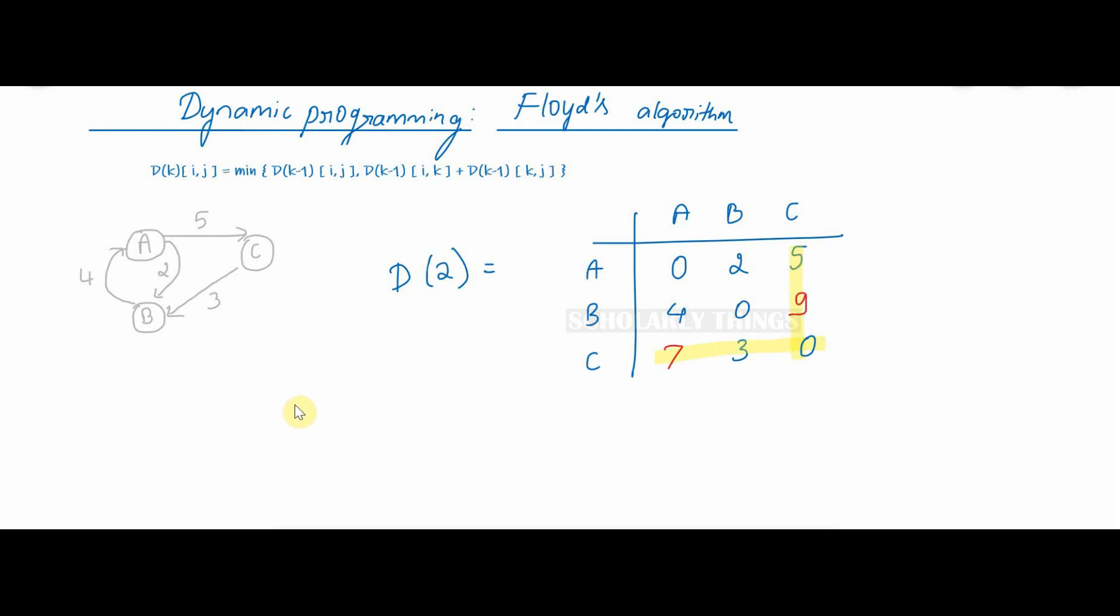In the next round k is equal to 3. Vertex 1, 2, 3 can be intermediate nodes. In this we can't find any more shortest path, so no change. Finally d3 looks like this. This matrix represents the all pairs shortest path for given graph.